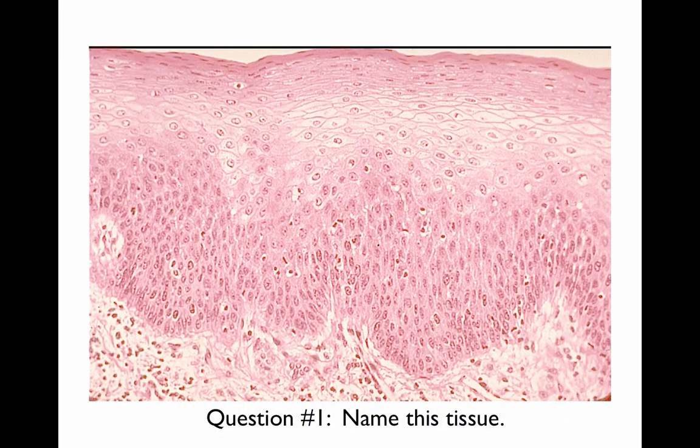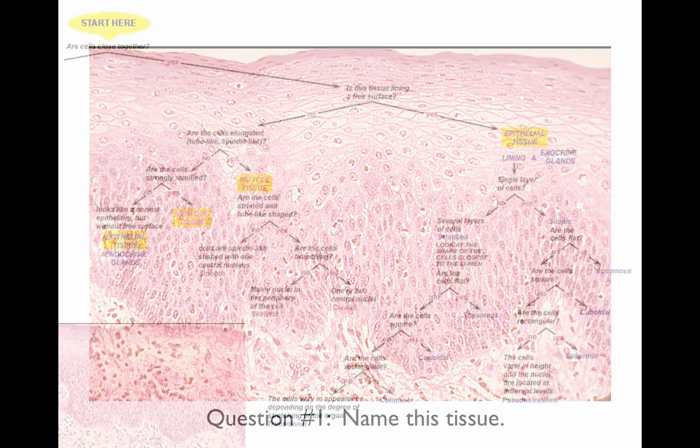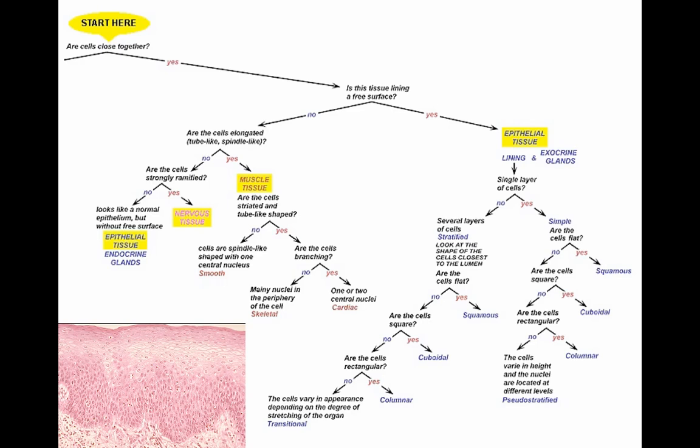Here's your first question: Name this tissue. It's kind of daunting. You look at it. Where do you start? Well, of course, you like to start where it says start here. Are the cells close together? Are they tightly packed? Certainly, the answer is yes. You don't see any spaces in between the cells.